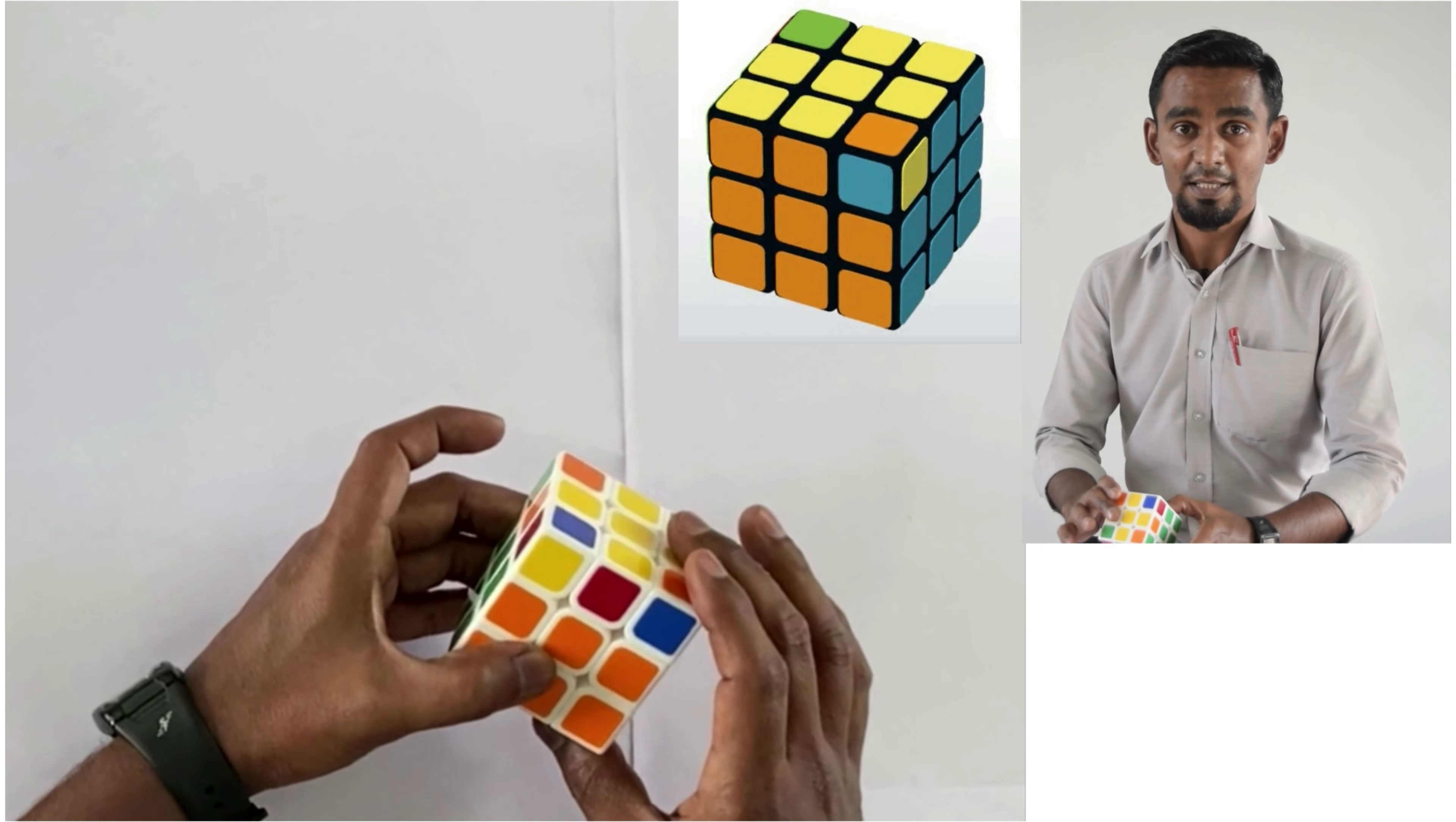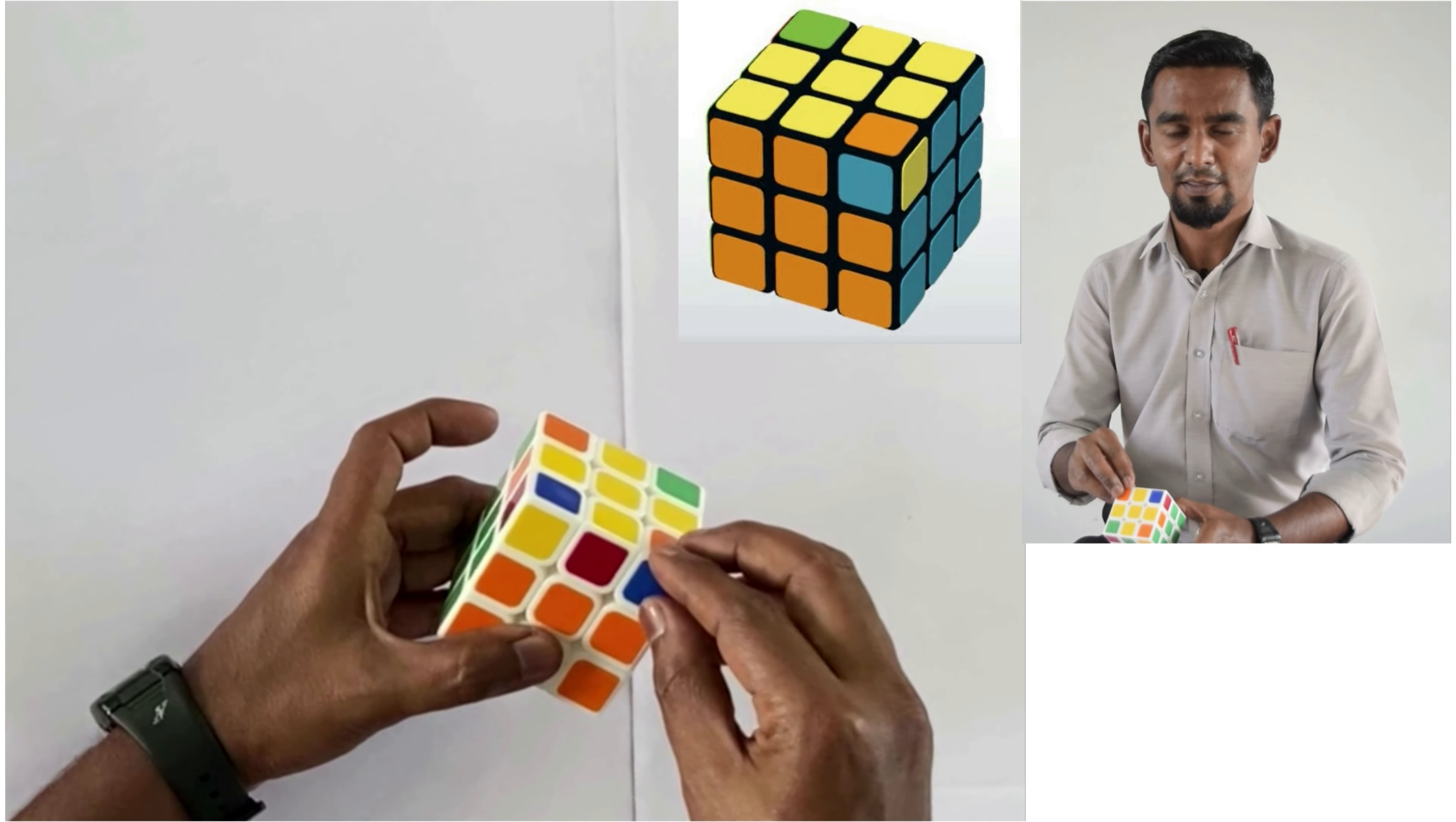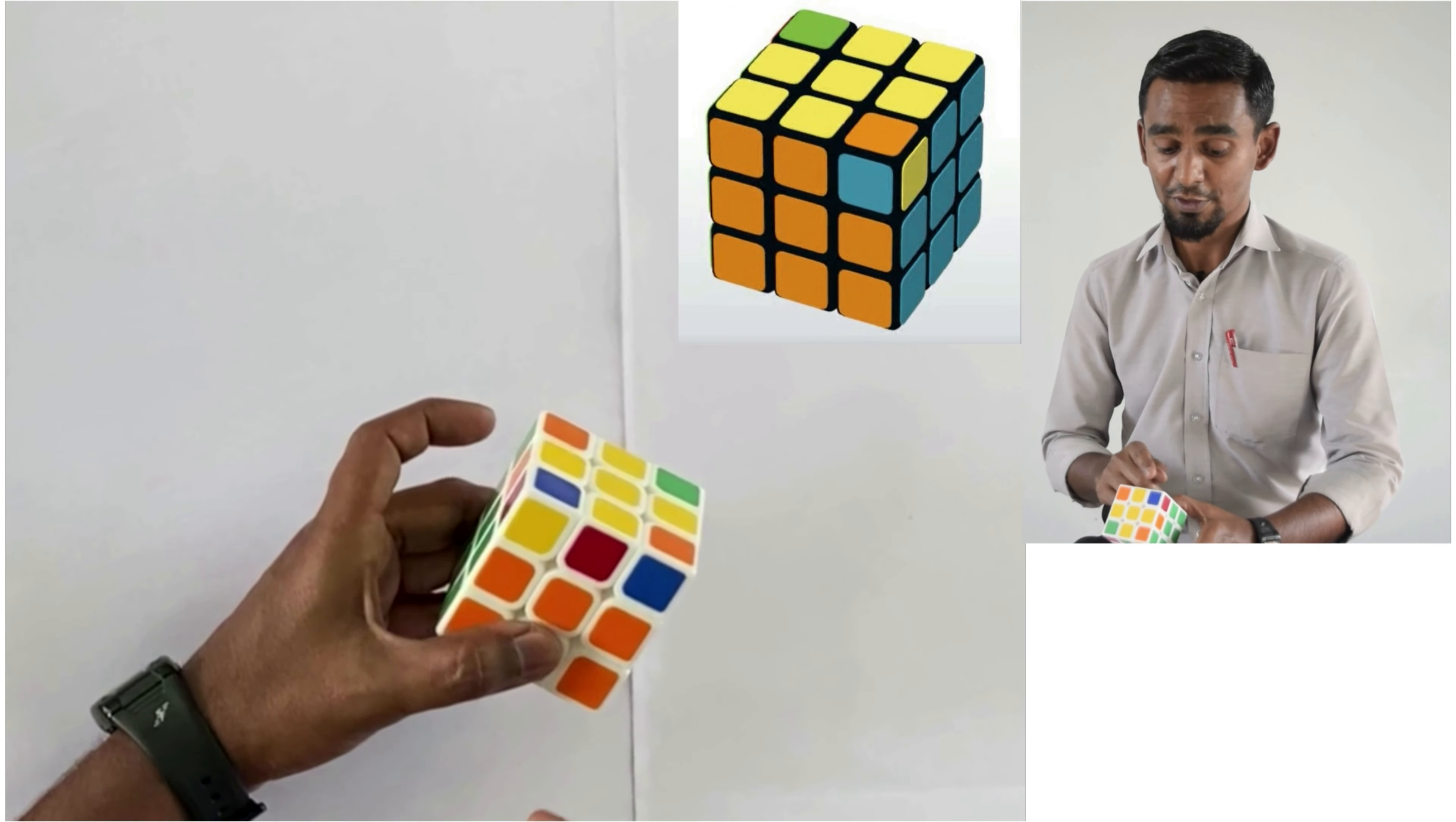In step 6, we are going to position the right corner cells in the right corners. For example, if the front face center is orange and the right face center is blue, we need to see whether the corner cell has blue and orange.